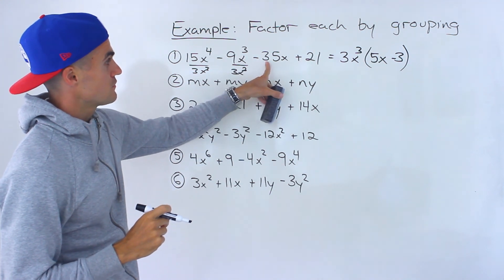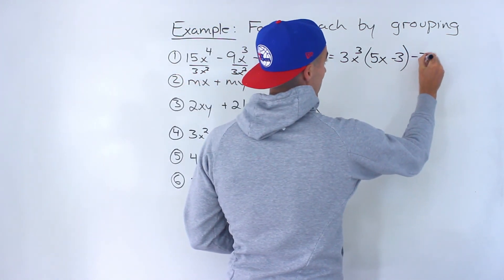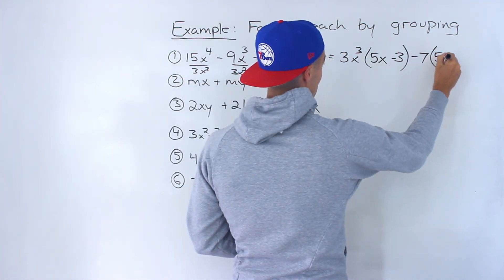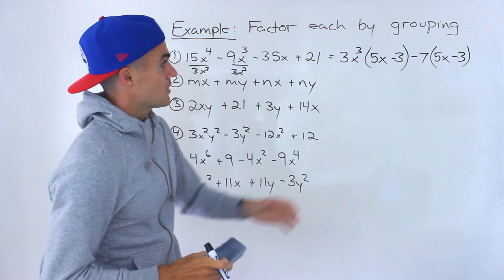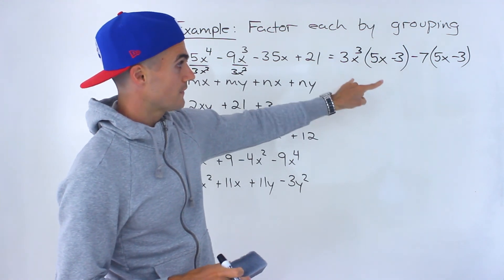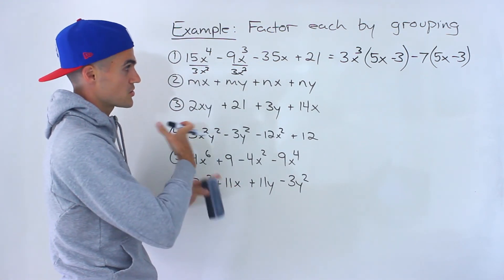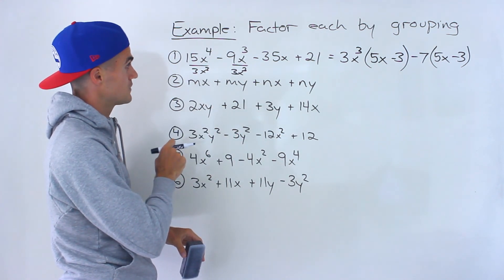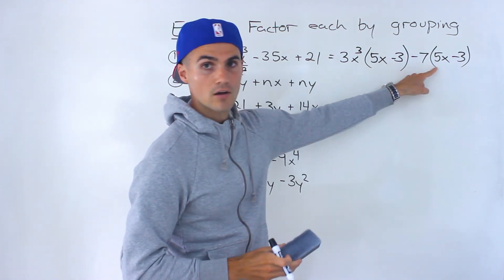Then from the last two terms — minus 35x plus 21 — what we could take out is a minus 7. Negative 35x divided by minus 7 gives us positive 5x, and 21 divided by negative 7 gives us minus 3. When doing factoring by grouping, these two brackets should always be the same. If they're not the same, you know you did something wrong. Sometimes you'll have to rearrange the expression first before factoring it — this first case was already arranged for you.